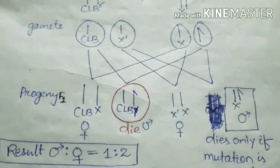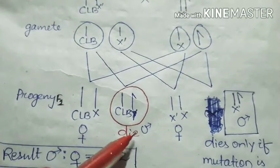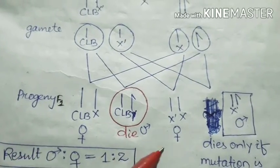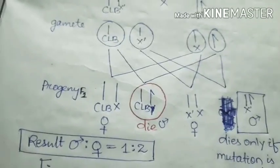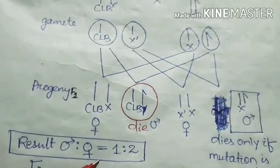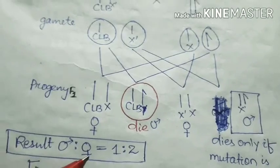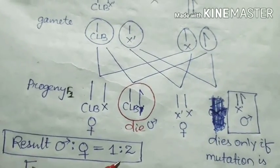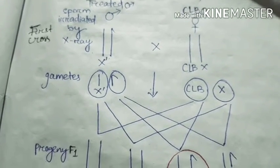Again, four progenies are produced and the CLB male is again died. But two females are there and one male is here. So the result of female to male is two to one. If the result of female to male is two to one, then the male flies were irradiated with X-ray.